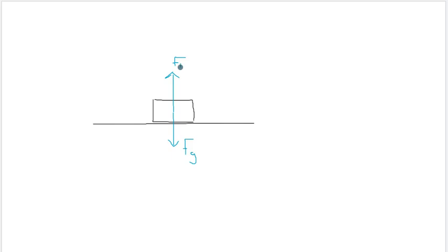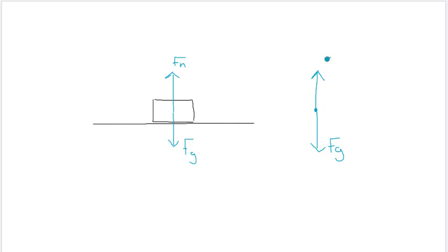Sometimes our diagrams get messy when we have lots of things on them, so we draw a dot to represent the center of mass of the object and draw the vectors on that dot. In your homework, for example, I may ask you to draw this diagram on that dot. You would draw the weight vector going down, labeled Fg, and the normal force going up about the same length, labeled Fn. If you want to find the normal force, it would simply be mg — mass in kilograms times gravity, 9.8. Weight is in the negative direction and the normal force is in the upward direction.